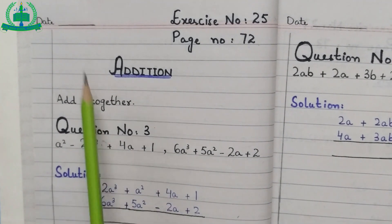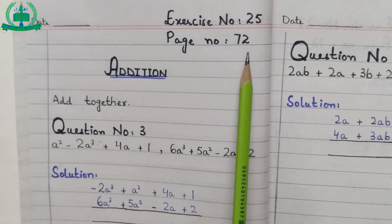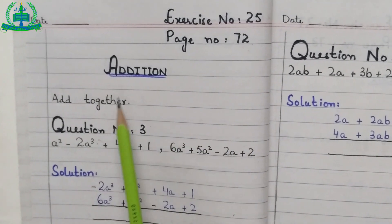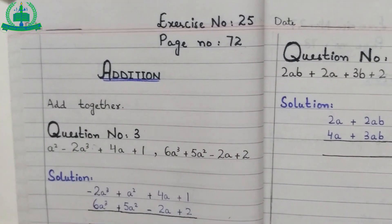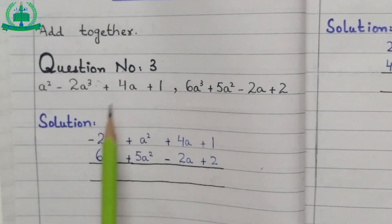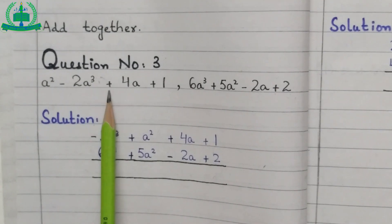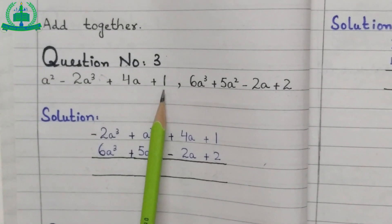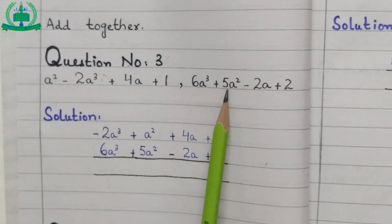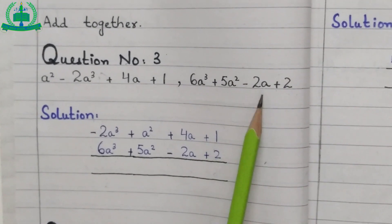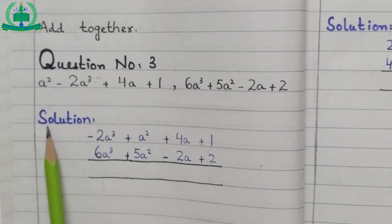Mention the date, exercise number 25, page number 72, and give the heading of addition. Question number three: first expression is a square minus 2a cube plus 4a plus 1. Second expression is 6a cube plus 5a square minus 2a plus 2.